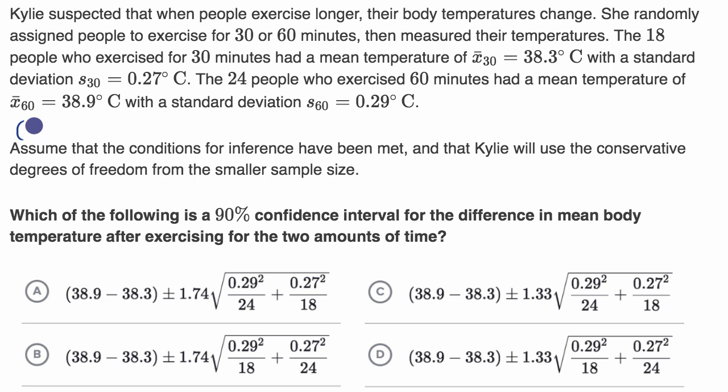our difference between our sample means, so it could be the sample mean for the 60 minute group minus the sample mean for the 30 minute group, plus or minus our critical T value, times our estimate of the sampling distribution of the difference of the sample means.